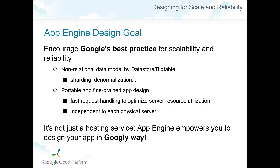To appreciate App Engine design more fully, you have to understand its design goal. It's not just a hosting environment or a data center. Google App Engine encourages you to use Google's best practices to design your applications. You may notice there are certain restrictions, rules, and practices to follow, but these are important best practices to make your application scalable and reliable in the googly way — like the non-relational data model. When using the data store, not Cloud SQL or MySQL, you have to design your data model to be shardable, and sometimes use techniques like data denormalization. For an experienced web application developer, this is actually a best practice to make any scalable and reliable website.